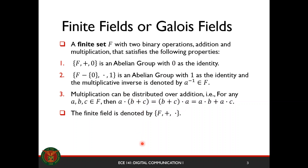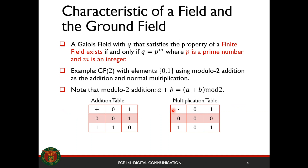This finite field can be denoted by F plus and dot. A Galois field with Q elements satisfying the properties of a finite field exists if and only if Q is equal to P to the M, where P is a prime number and M is an integer. Basically, we have a Galois field if the number of elements Q equals P to the M, where P is prime and M is some integer.